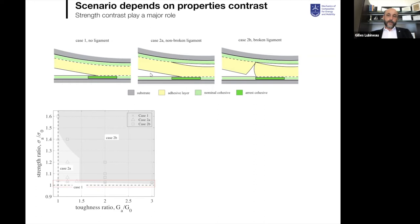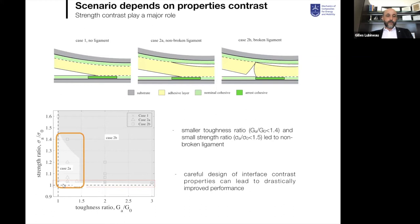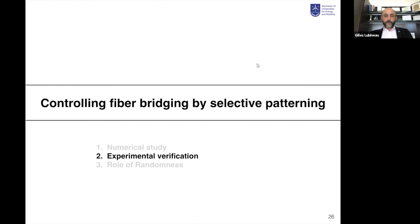Based on extensive numerical simulation, we showed that case 2A — the most interesting — is governed by the contrast in strength and the contrast in toughness between light green and dark green. You need a minimum contrast in strength to initiate a secondary crack at the top interface, while ensuring the toughness contrast is not too large so the ligament doesn't break too quickly. If you correctly control this strength and toughness contrast — achievable through laser treatment — you can verify this experimentally.